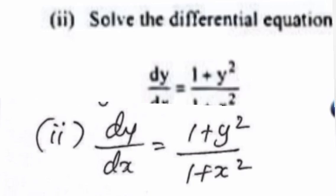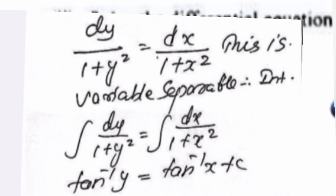Solve the differential equation: dy/dx = (1 + y²)/(1 + x²). Answer: Cross-multiply to get dy/(1 + y²) = dx/(1 + x²). This is variable separable. Integrating both sides: tan inverse(y) = tan inverse(x) + C.